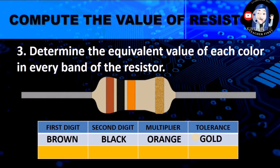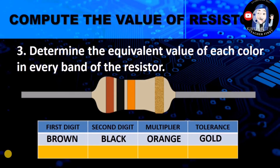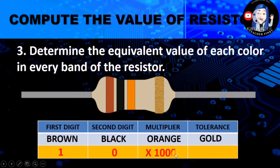Next, determine the equivalent value of each color in every band of the resistor. After identifying the different colors seen on the resistor, we now assign a value to each color. First digit, brown — according to the color coding chart, it has a value of 1. While black, as the second digit, has a value of 0. The multiplier, which is orange, has a value of 1,000.